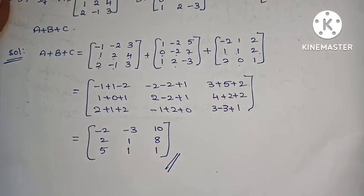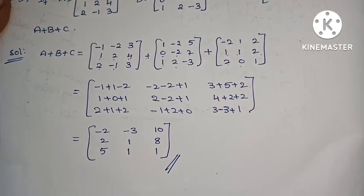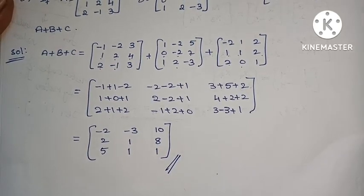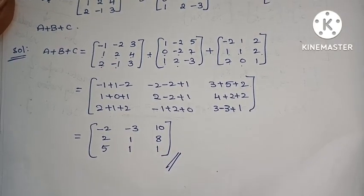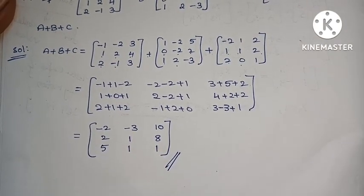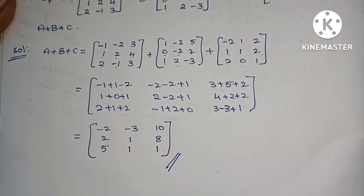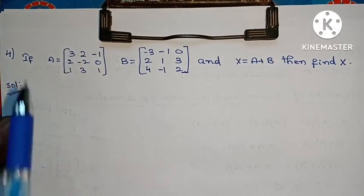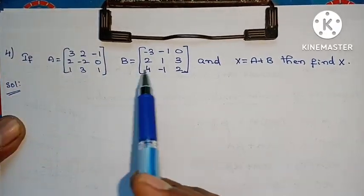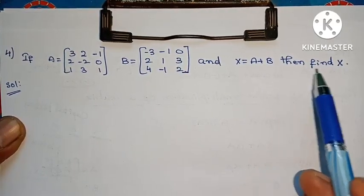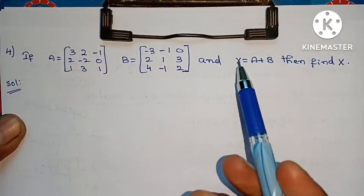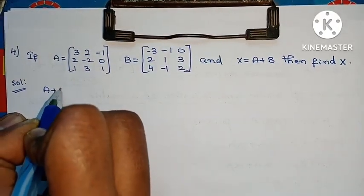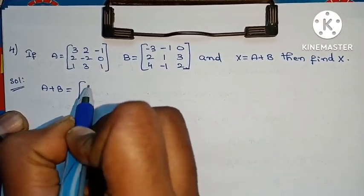The problem is complete — that's very simple. In the beginning it's a simple problem; as we go further, the difficulty will start. But matrices are quite easy. Next problem: if A equals to a matrix, B equals to a matrix, and X equals to A plus B, then find X. We compute A plus B directly.